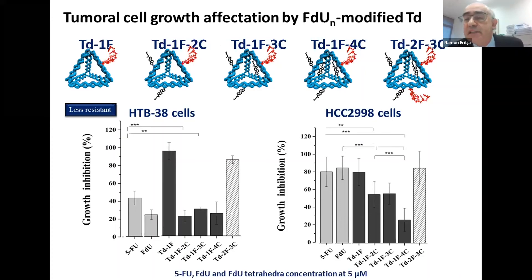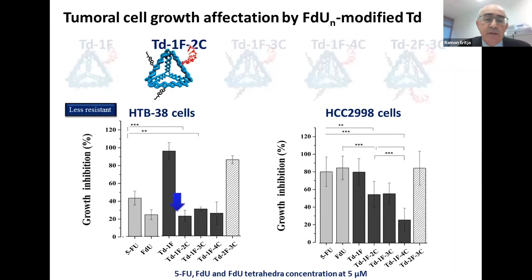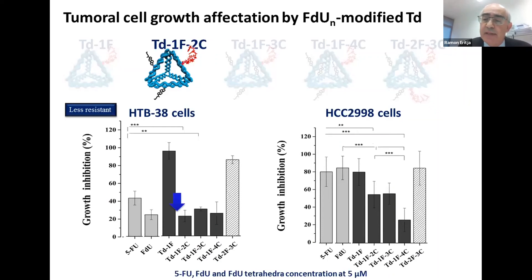If the cells are not functioning well, they will not form colonies. We see that the activity is much better here — even after only 24 hours with the MTT, we did not kill the cells, but most cells were already affected. Remember that these are FDU-resistant cells, so this is a very good result. The tetrahedron gives the best activity, and the best conditions are one oligomer and two cholesterols.